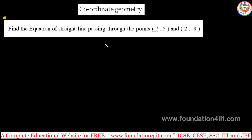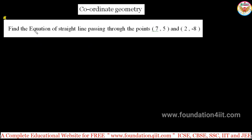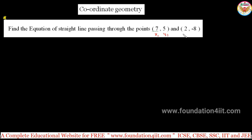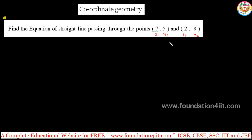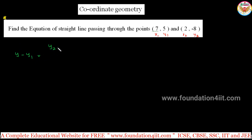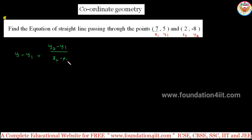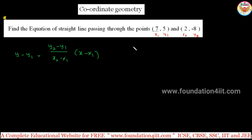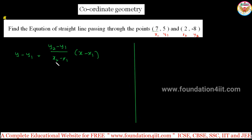We have already done these types of problems at school level. Generally, we use the traditional method where the given points are (x1, y1) and (x2, y2). The traditional formula is: y minus y1 equals y2 minus y1 divided by x2 minus x1, multiplied by x minus x1. This is the traditional method formula.